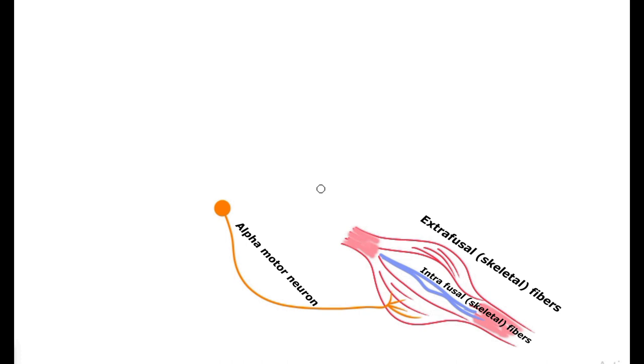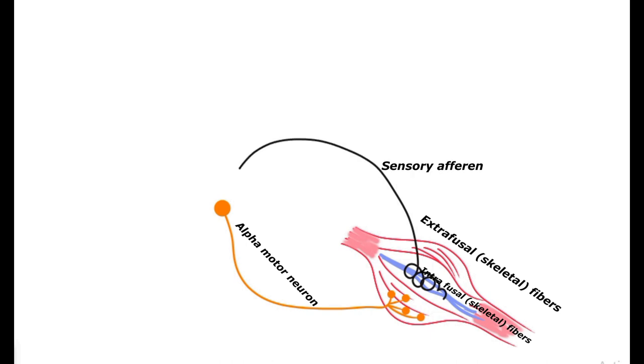We have the anterior horn from where the alpha motor neuron emerges and supplies the extrafusal fibers, which are the contractile elements of the skeletal muscles, through the neuromuscular junction. From the intrafusal fibers, the afferent sensors emerge and end in the anterior horn cell.